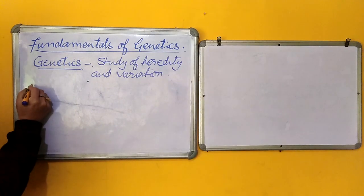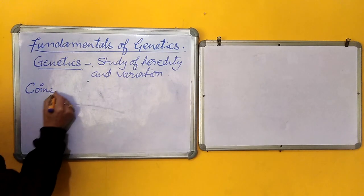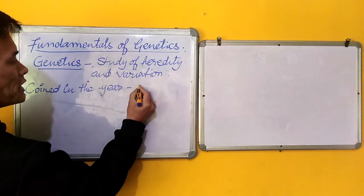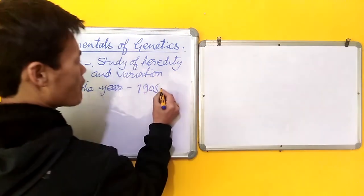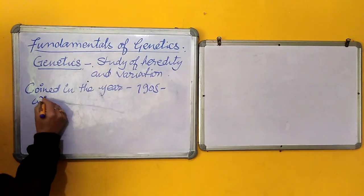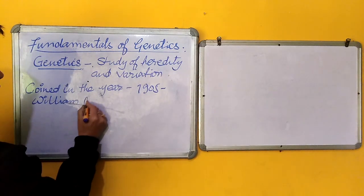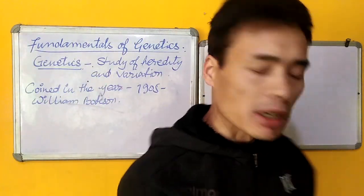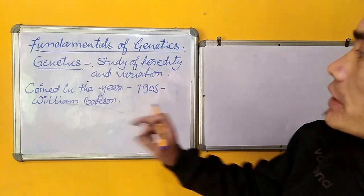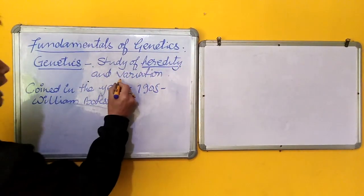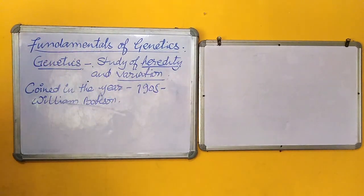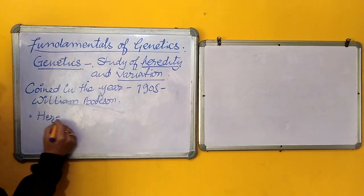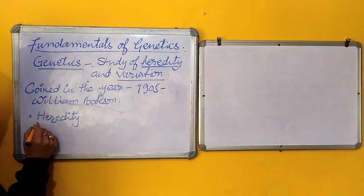This term genetics was coined in the year 1905 by William Bateson. Here there are two terms included in the definition of genetics and that is heredity and variation. So the next item that I shall discuss are heredity and variation.